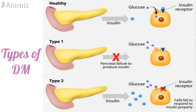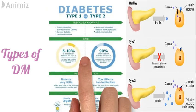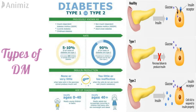In Type 1 diabetes mellitus, beta cells of the pancreas fail to produce insulin because of an autoimmune disorder in which immune cells of the body attack and disrupt the beta cells. Type 1 diabetes is also called insulin-dependent diabetes mellitus, juvenile diabetes, or childhood diabetes, as it usually occurs in young children and teens. It accounts for 5–10% of all diabetes cases.